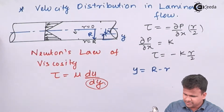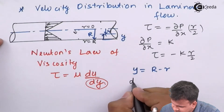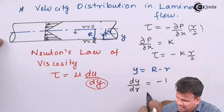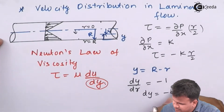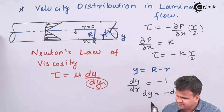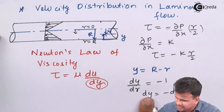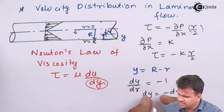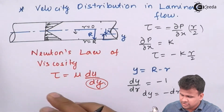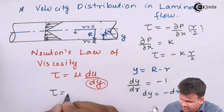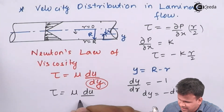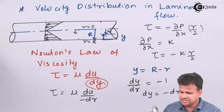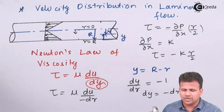If we differentiate y with respect to r, dy/dr equals minus 1, so dy equals minus dr. We have now changed from the rectangular coordinate system to the radial or cylindrical coordinate system by replacing dy with minus dr. Therefore, Newton's law of viscosity becomes tau equals mu times du divided by minus dr, and we can use this to calculate the velocity.